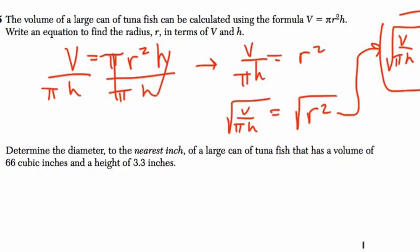Now, determine to the nearest inch the diameter. Remember, diameter is twice the radius. We take the radius, we double it, that's our diameter of a large can of tuna fish that has a volume of 66 cubic inches and a height of 3.3 inches.